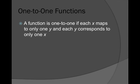A function is one-to-one if each x maps to only one y and each y corresponds to only one x. You guys remember what it takes to be a function. A relation is going to be a function if each x maps to only one y. Well, now we're going to add one-to-one, which says each y corresponds to only one x. This is the new part for us.